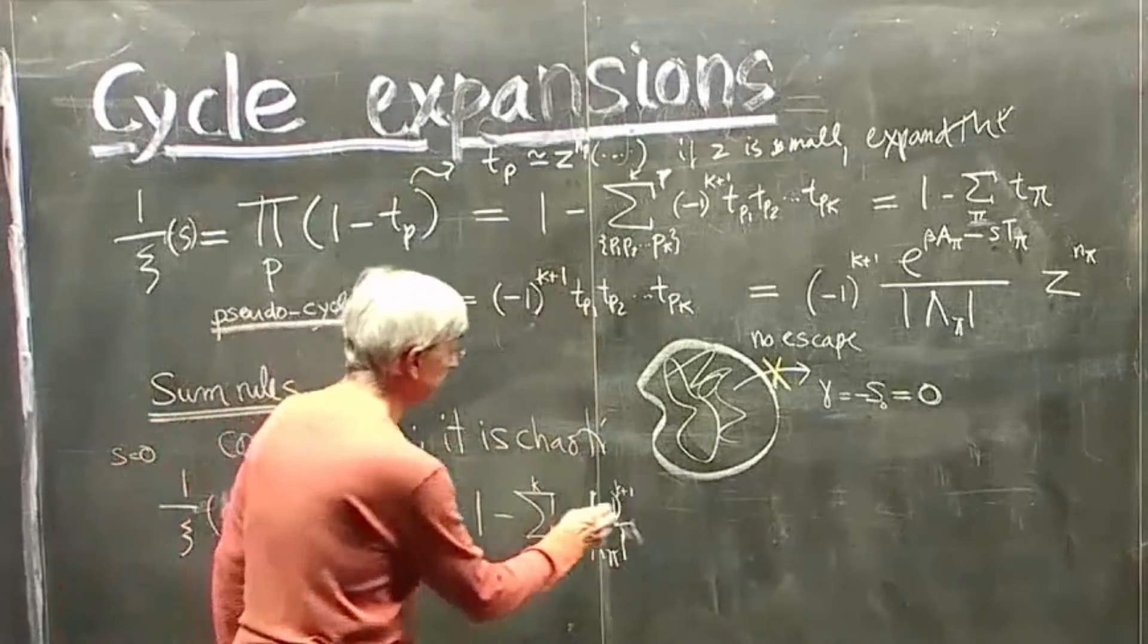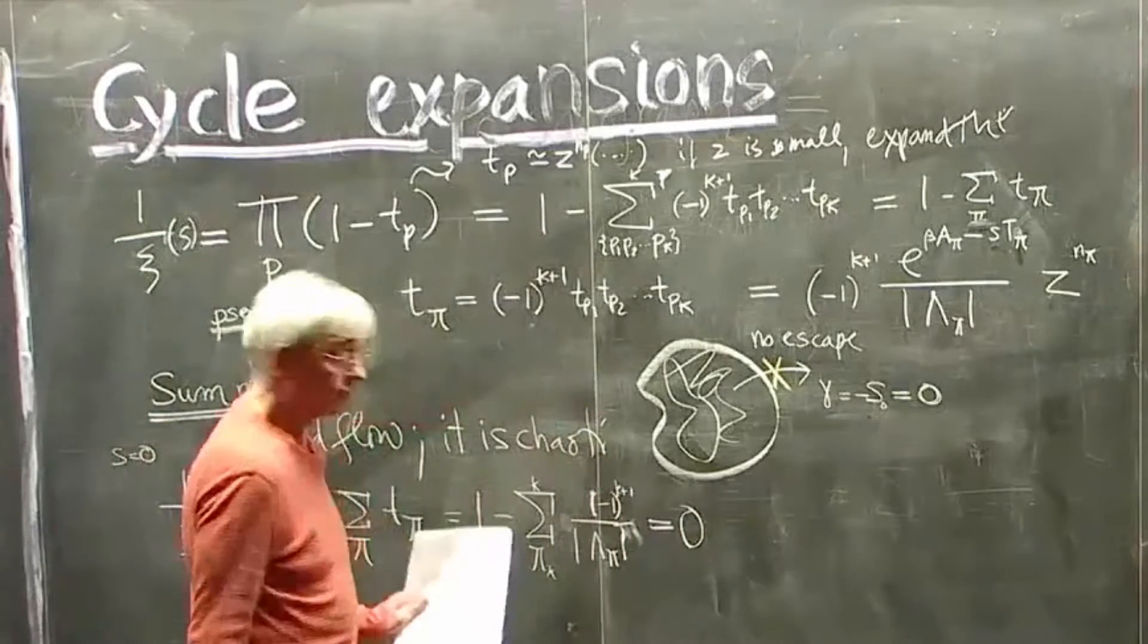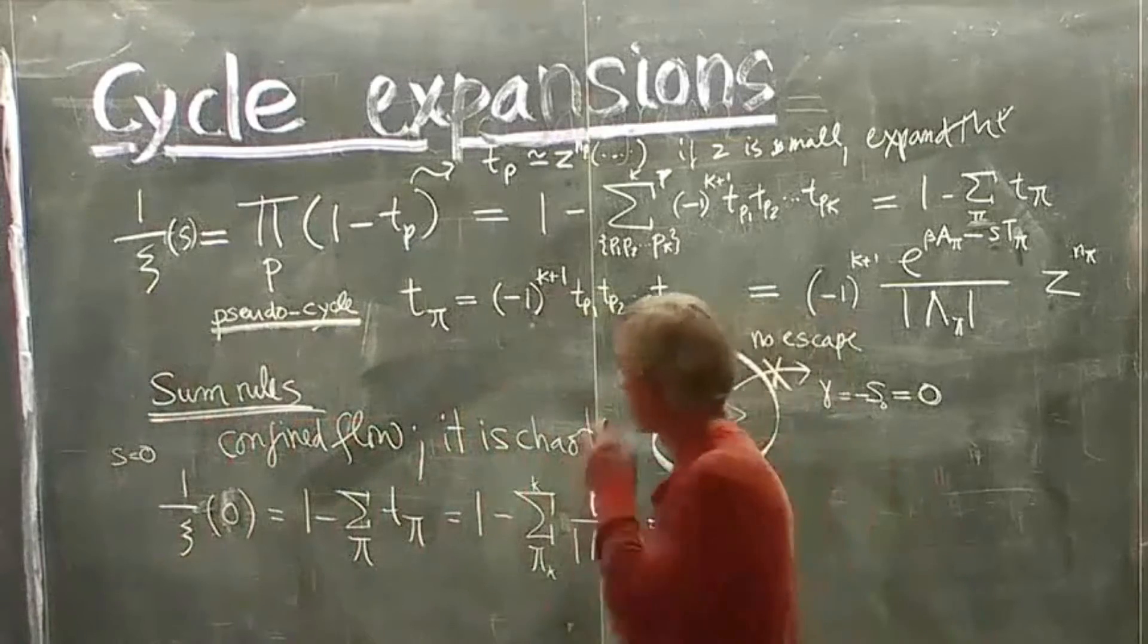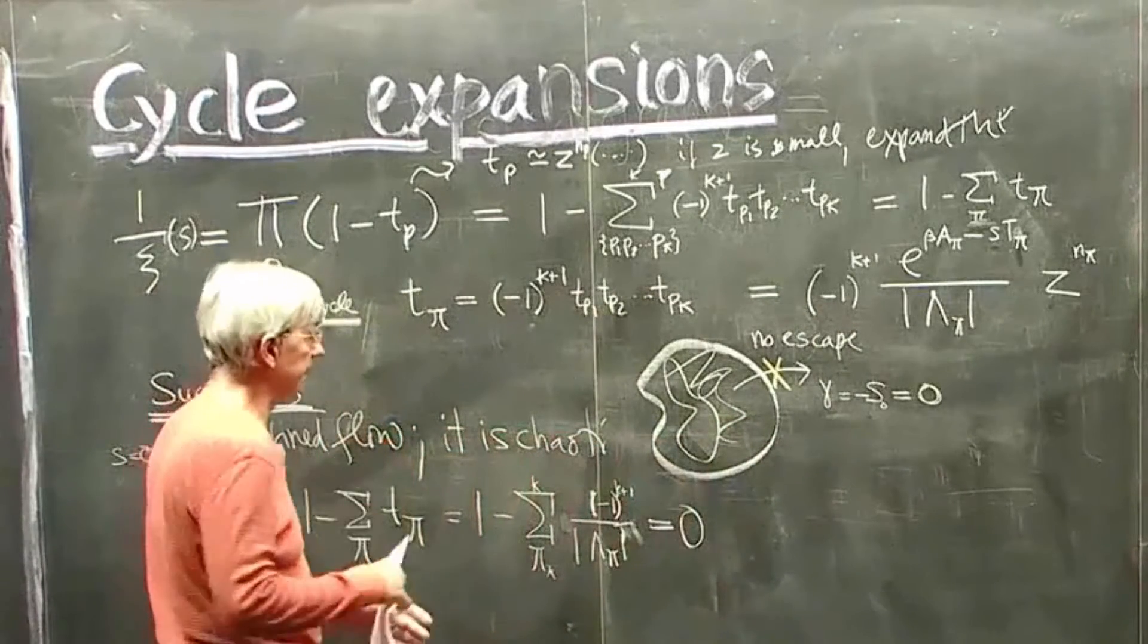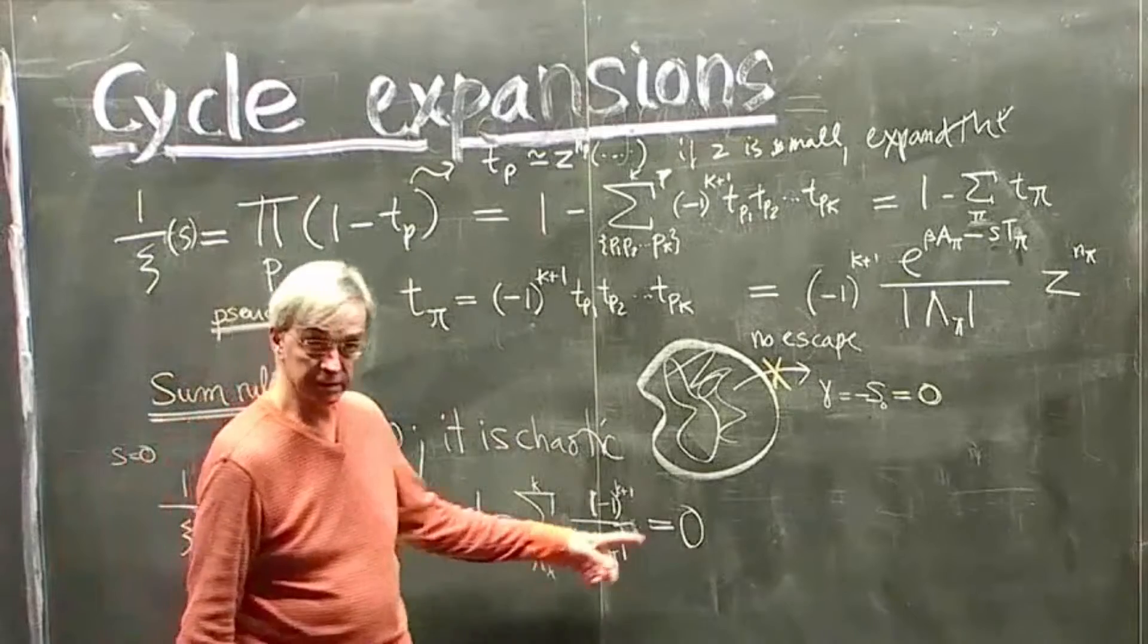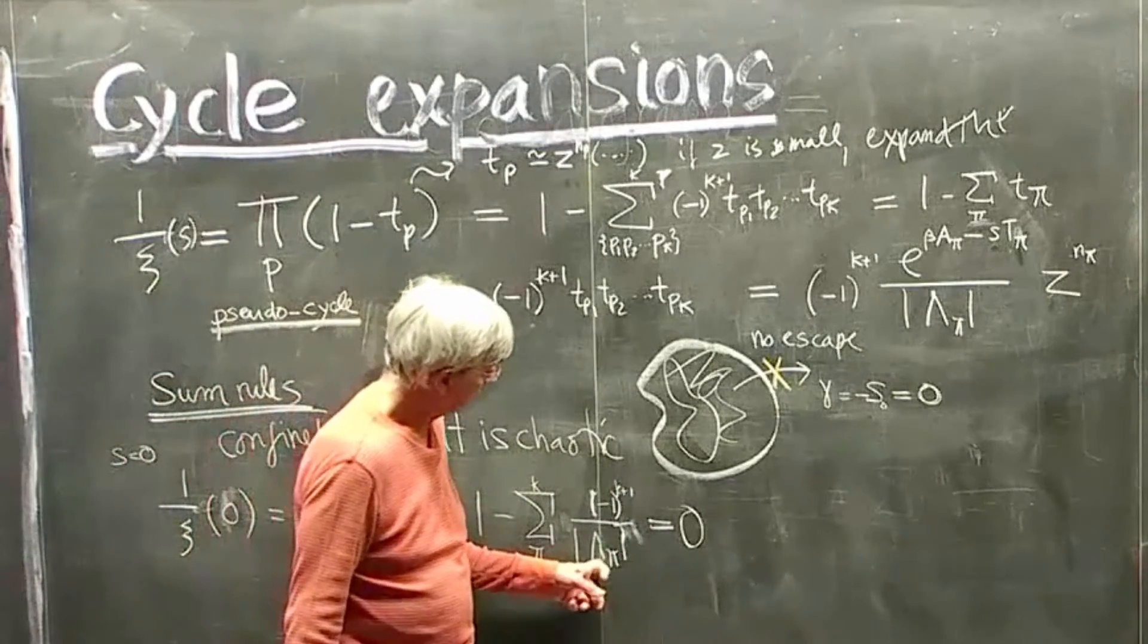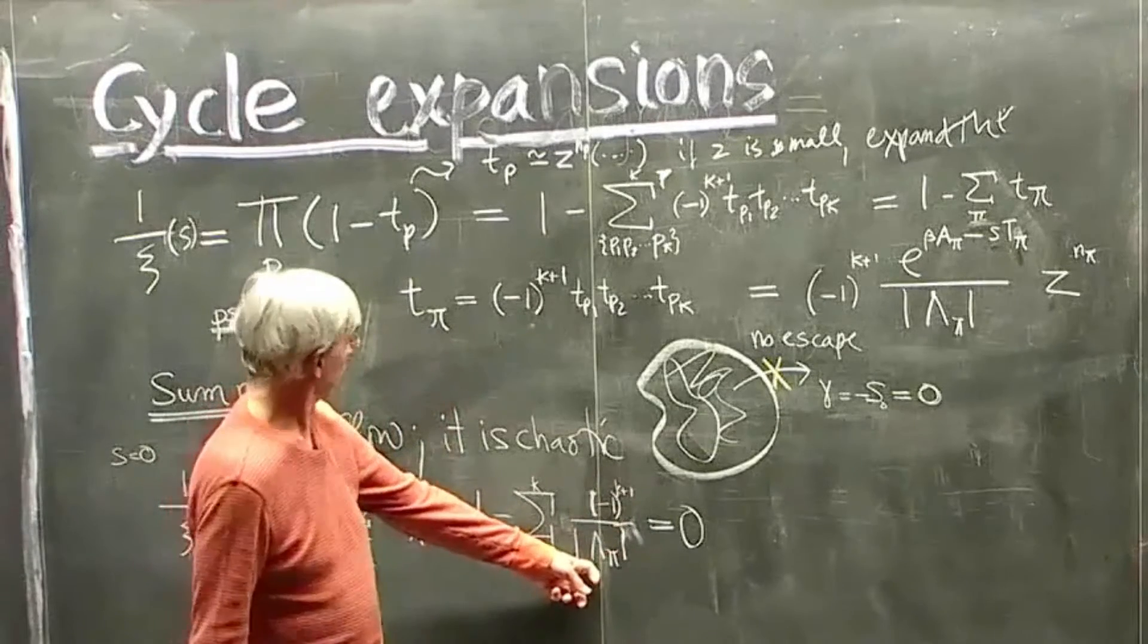So this particular sum has to be zero. Now in your calculations, you always have a finite number of periodic orbits. So if you have a confined system, a flow in which you cannot escape, then you must check how good this sum is.